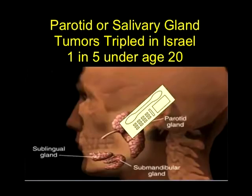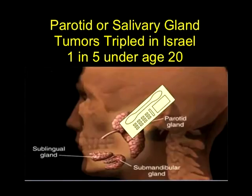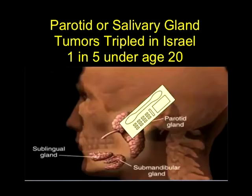The parotid gland is right here by the jaw. The Israeli Dental Association has issued a warning because recently they found one in five cases of this rare tumor is occurring in children under the age of 20. The Israeli government has issued warnings on its website that everybody should not hold a cell phone directly next to their head. The government website clearly warns everyone to use a headset, children should be encouraged to text, and never keep a phone directly on or next to their bodies.